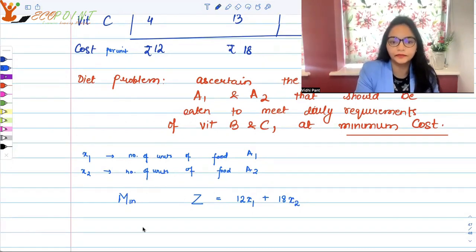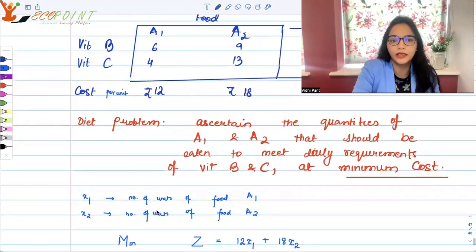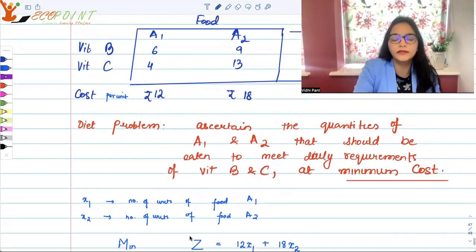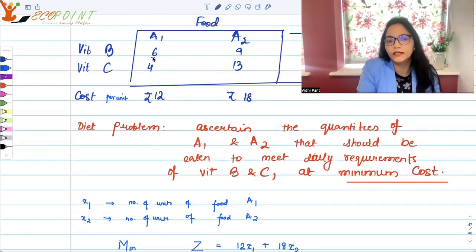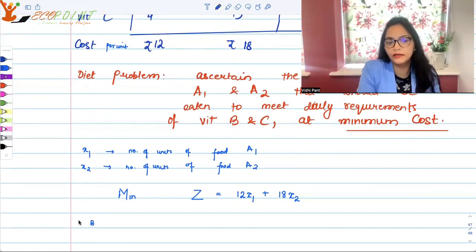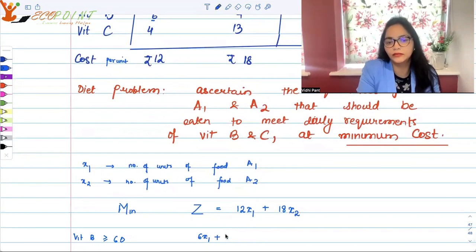I will be spending how much on A1? 12x1. 18 per unit for A2, so I will be spending 18x2. I would want to minimize this cost under what condition? My minimum requirements should be met, right? Under the conditions that, if you observe food item A1, if I am taking x1 units of A1, it is already given that 6 units from A1 - if the total is 10, then 6 goes to vitamin B and 4 is per C.